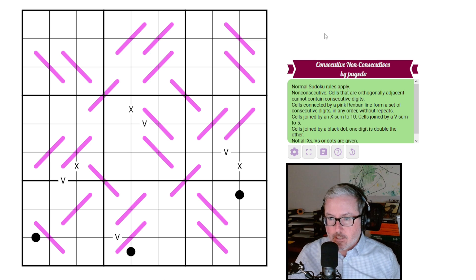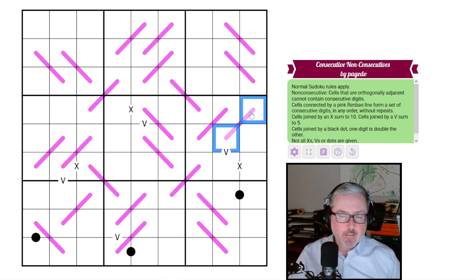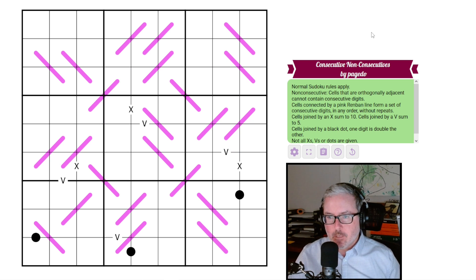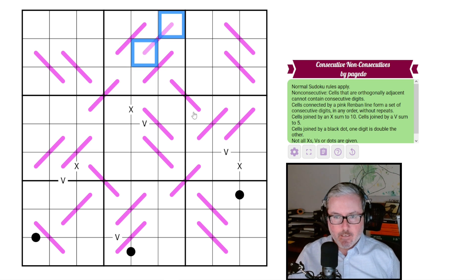Then we have cells connected by a pink Renband line form a set of consecutive units in any order without repeat. So that's the consecutive side of this thing. So obviously, these little stubby Renbands are all going to be two-cell groupings that are consecutive. So one, two, three, four, seven, eight, whatever it may be. So there's a little dichotomy, if you will, of all of these guys being consecutives, but none of the remaining groupings can be.